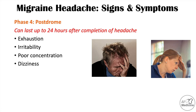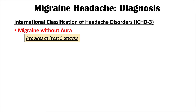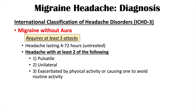The diagnosis of migraine headaches uses criteria from the International Classification of Headache Disorders, ICHD-3. For migraine without aura, a patient requires at least five attacks. The headache must last four to 72 hours (especially if untreated), and have at least two of the following: pulsatile or throbbing nature, unilateral location, exacerbation by physical activity or avoidance of routine activity, and moderate to severe intensity.